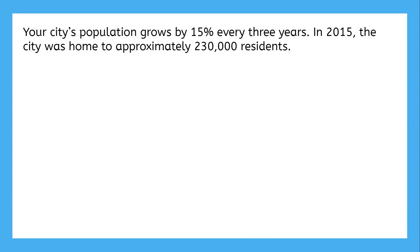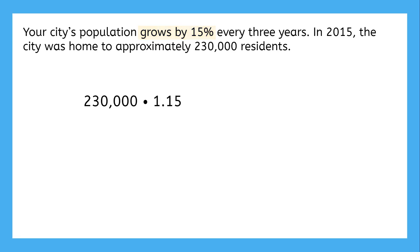Your city's population grows by 15% every three years. In 2015, the city was home to approximately 230,000 residents. The important pieces of information here are the initial value and the growth factor. Since this growth factor is a percentage, we do need to be careful. Since the amount is growing by 15%, we first use a factor of 1 so that we can keep the previous amount plus 15 hundredths, giving us a growth factor of 1.15.